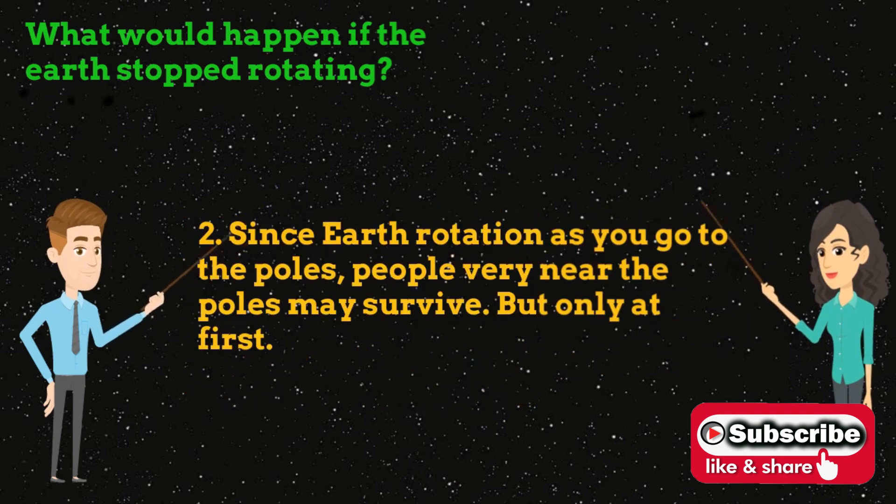Number 2: Since Earth's rotation slows as you go to the poles, people very near the poles may survive. But only at first.